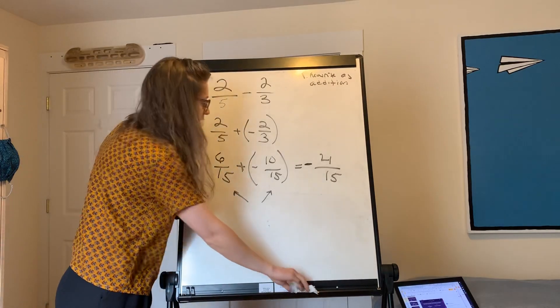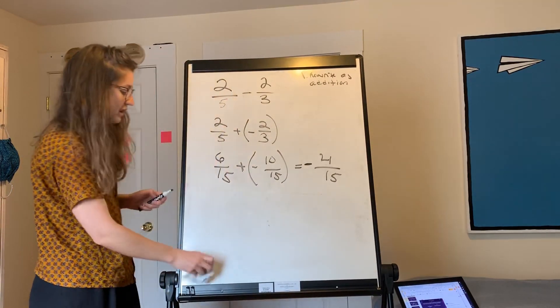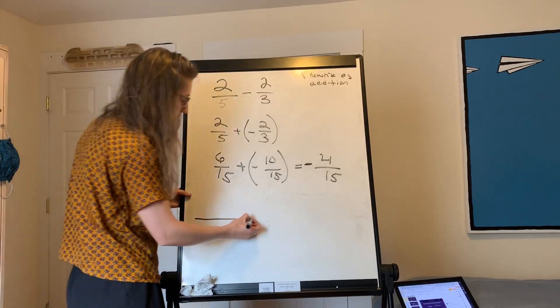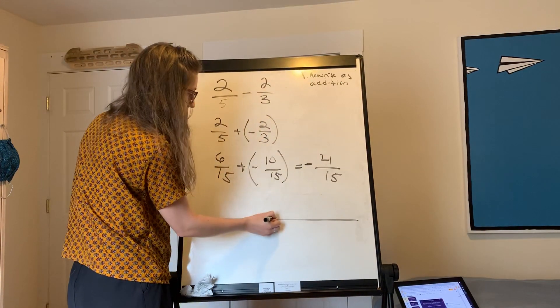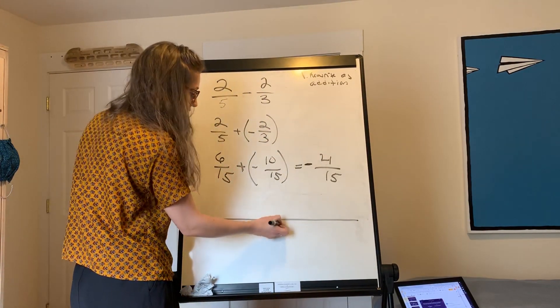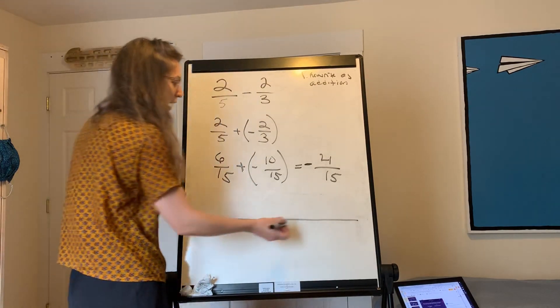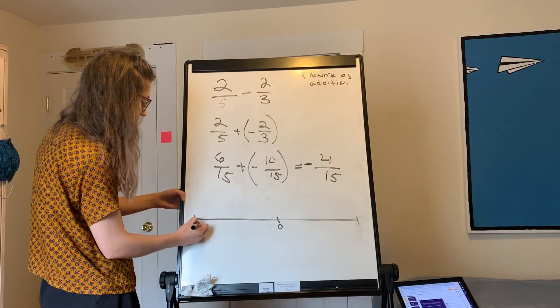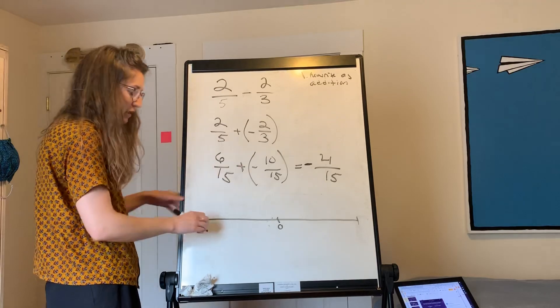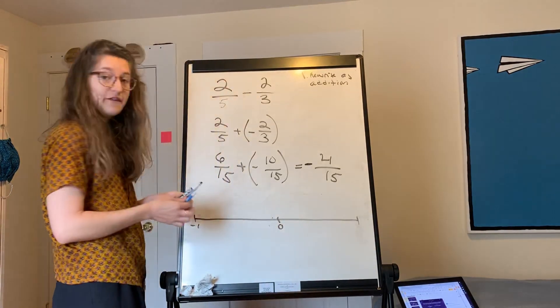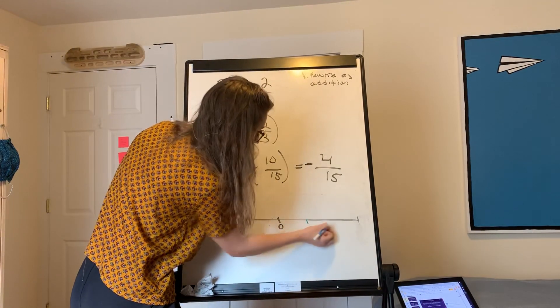I'm going to really quickly show you this on a number line as well. So here's our number line. We want zero to be on our number line. And I'm going to make it go from one to negative one. And I'm going to break up these into fifteenths.